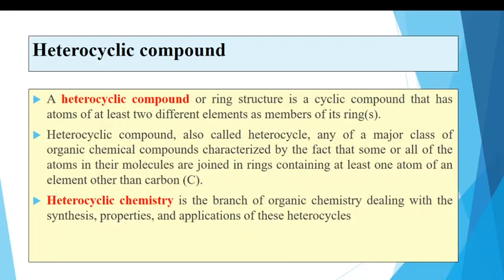Heterocyclic compounds, or ring structure, is a cyclic compound that has atoms of at least two different elements as members of its ring. So in the ring structure of heterocyclic compounds, two different elements are present. Heterocyclic compounds are also called heterocyclus, and they represent a major class of organic chemical compounds characterized by the fact that some or all of the atoms in their molecule are joined in a ring containing at least one atom of an element other than carbon.